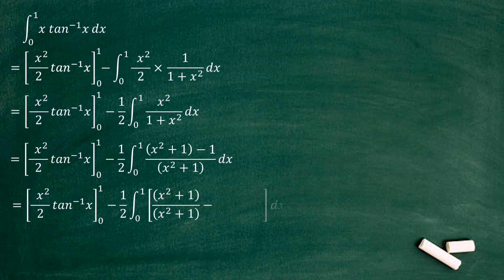Now we can cancel out numerator value x squared plus 1 for the denominator value x squared plus 1. Then we have 1 minus 1 over 1 plus x squared.